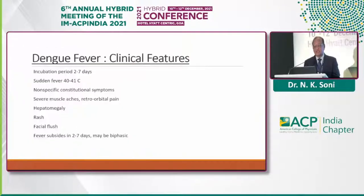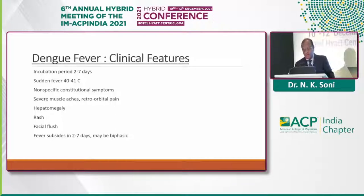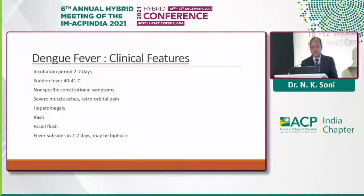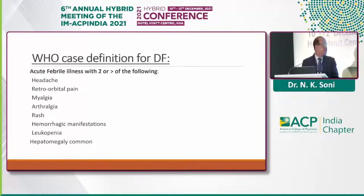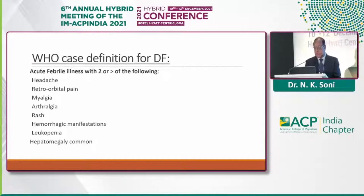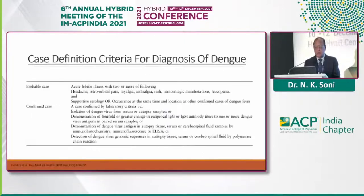The clinical features of typical dengue fever include sudden onset of high-grade fever with chills and rigors, incubation period of around 2 to 7 days, severe muscle aches, retro-orbital pain, hepatomegaly, rash, facial flushing, and fever subsiding within 2 to 7 days. The WHO definition requires an acute febrile illness along with at least 2 or more of the following: headache, retro-orbital pain, myalgia, arthralgia, and rash. If more than 2 of these symptoms are associated with febrile illness, it is most probably dengue fever.